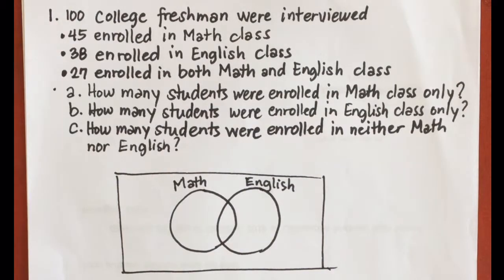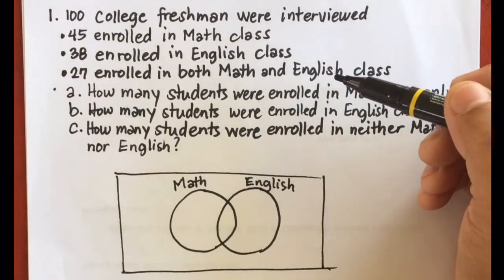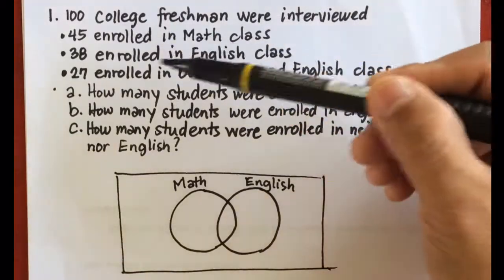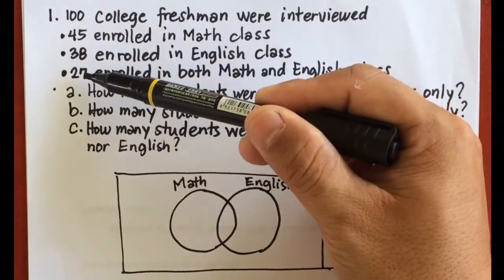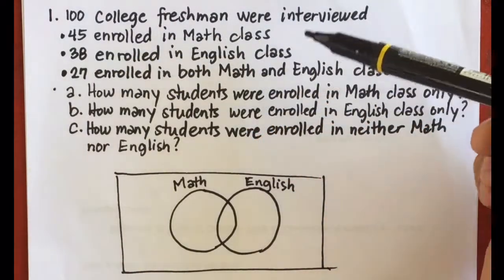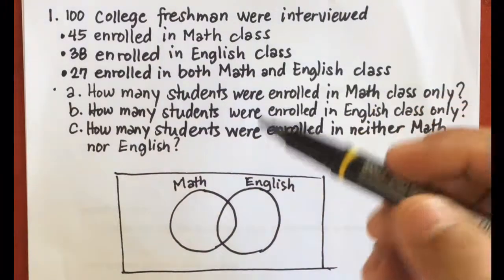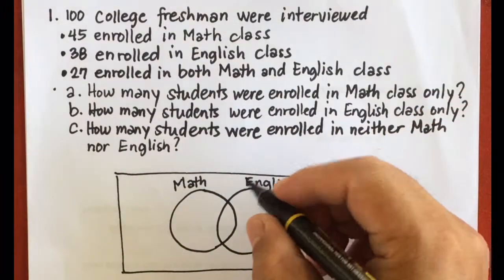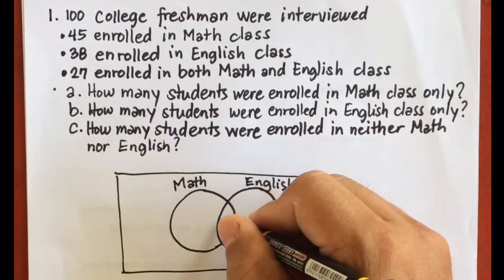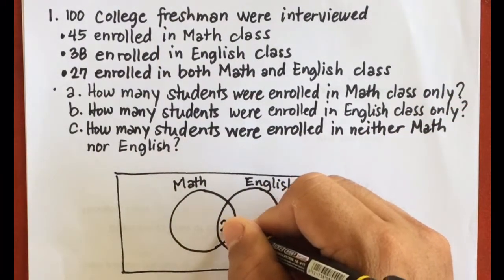To solve this problem, we're going to start with the intersection of the two sets for math and English. We have 27 students enrolled in both math and English class, so in the intersection we write 27.